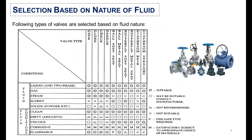The first selection criteria is the nature of the fluid. For liquid and gas phase, there is a wide range of valves available for selection. But for steam, we can select gate, globe, check, and needle valves, while ball, butterfly, and diaphragm valves are not suitable. Similarly, for slurry, ball, butterfly, and diaphragm valves are recommended.